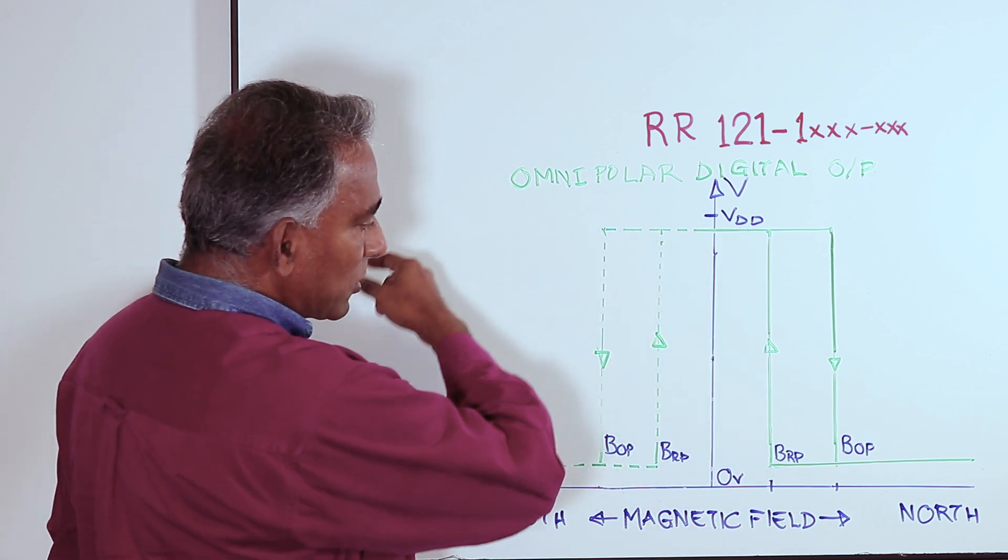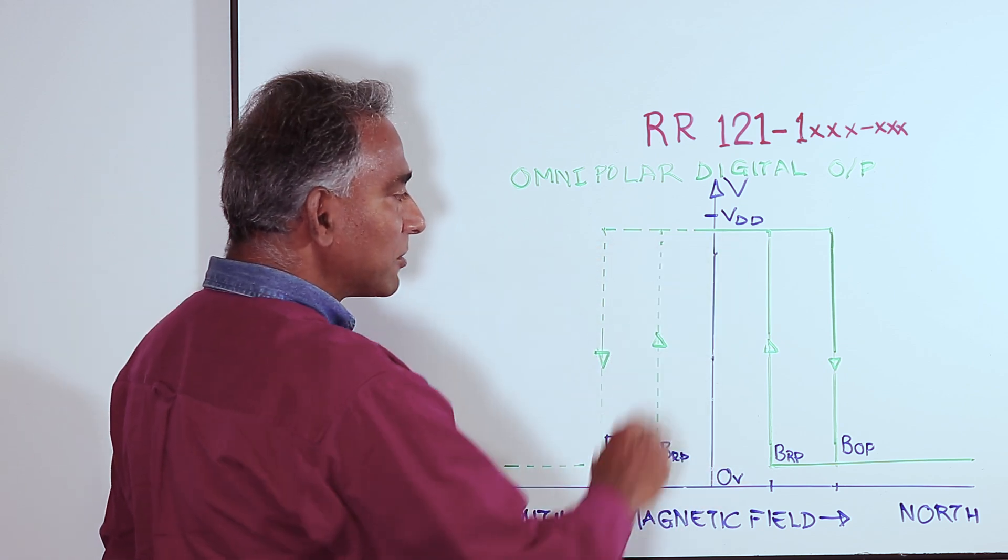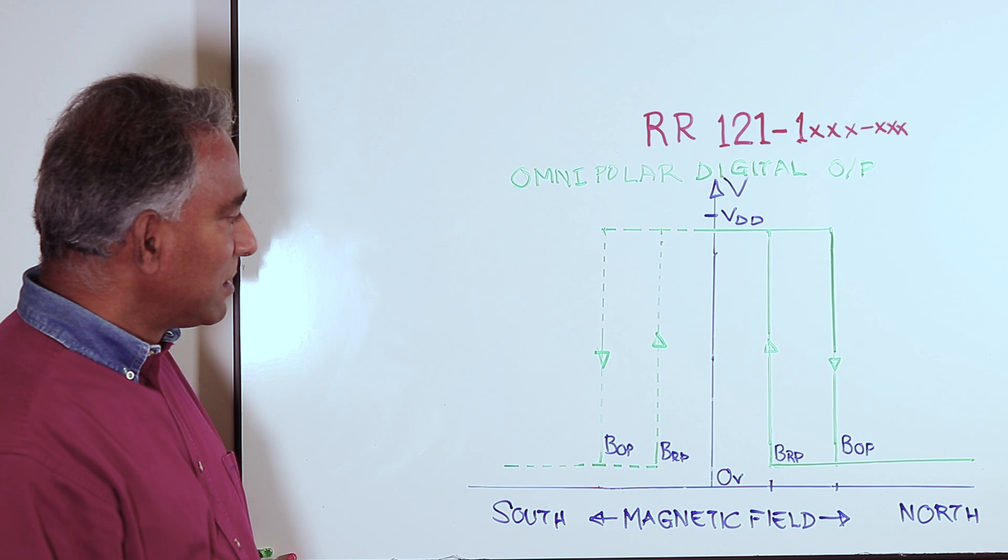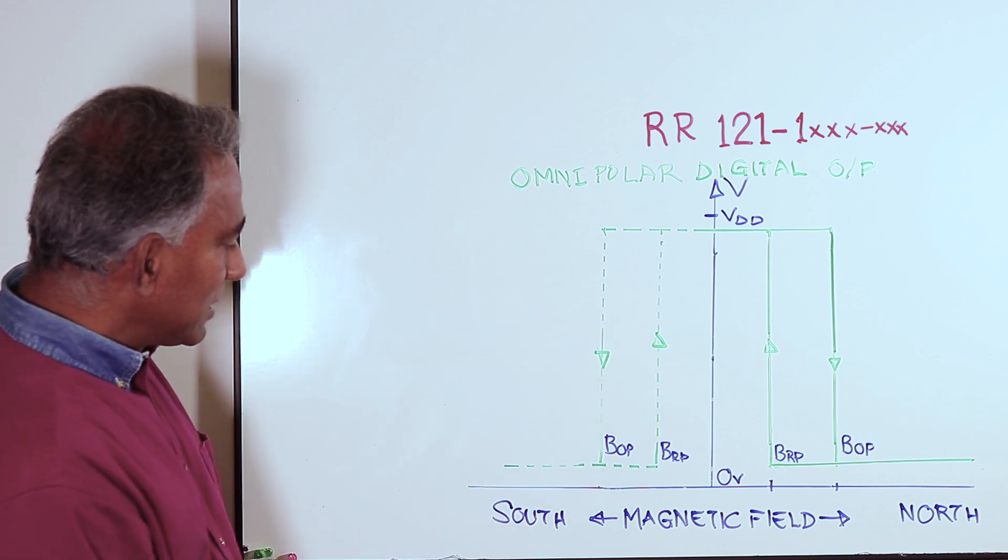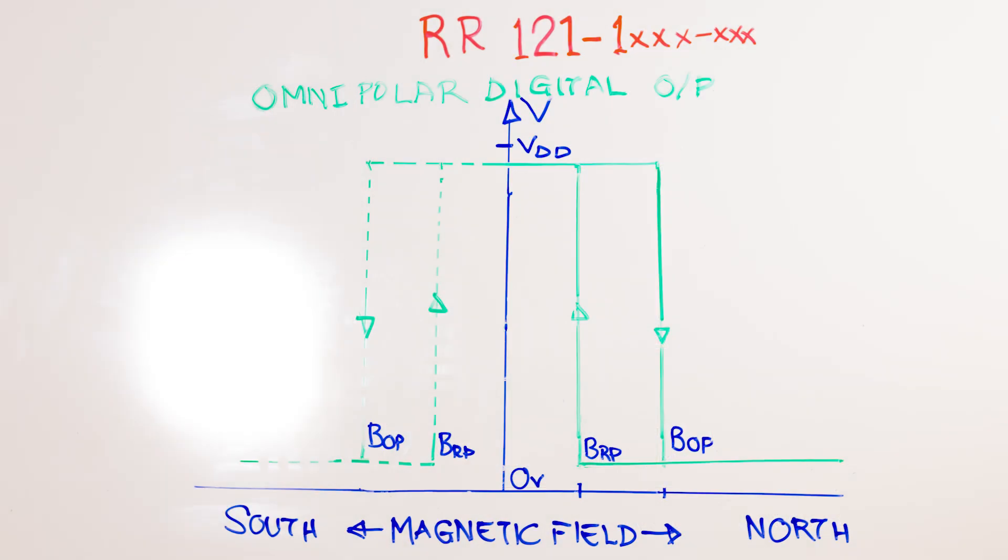If the magnet is moved further away, as the north pole of the magnet is moved further away, the output simply remains in the off state. What we see here is if it were the south pole of the magnet that approaches the sensor, we would have a very similar output profile but on the left side of this chart. These two being identical, we say the sensor responds similarly regardless of whether it's the north pole or the south pole that approaches the sensor.